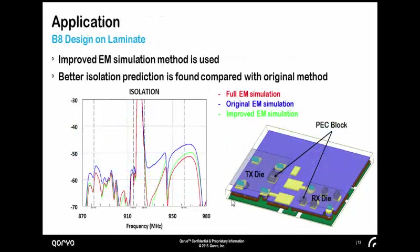Using the same method, we applied it to another band. This is the band 8 design on the laminate — a totally different application. In this case, the TX die and RX die are not next to each other; they are separated by the matching element. Also, in this case, I don't need to define a large PEC block — I can use a small one just for the ground pad. The left plot shows the comparison: red is the full EM with filter under laminate, blue is the original EM simulation — we can see the discrepancy — and the green, using the new method, can match the full EM simulation quite well.